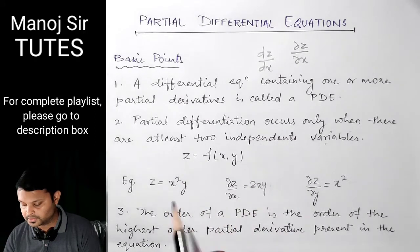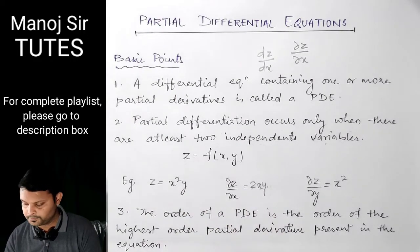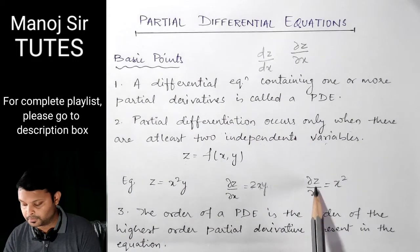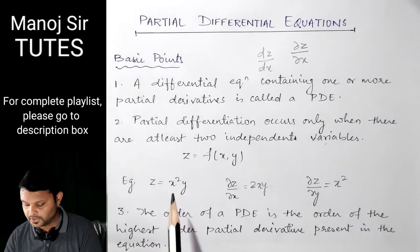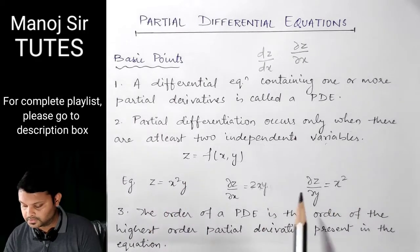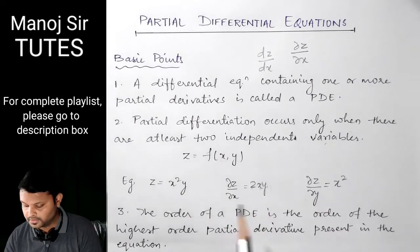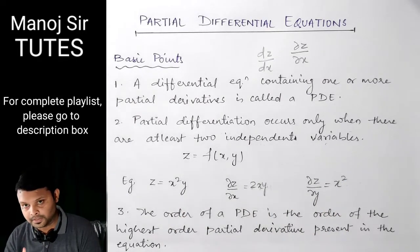So DEL Z upon DEL X equals 2X into Y — X squared becomes 2X and Y remains as it is. Similarly, if you want to find DEL Z upon DEL Y, it means we are keeping X as constant, so X squared remains as it is. Since we are differentiating partially with respect to Y, Y becomes 1. So X squared into 1 equals X squared.